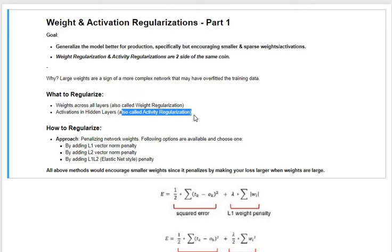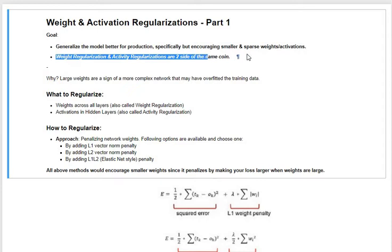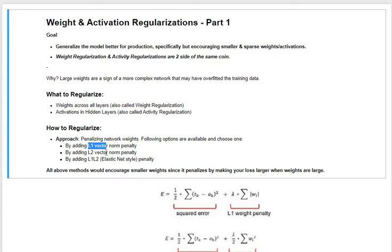We will see through a demonstration that both weight regularization and activity regularization are two sides of the same coin — if you tweak one, the other also has an impact. The approach we will take is to use the well-known forms of vector normalization: L1 norm, L2 norm, and L1-L2 norm.